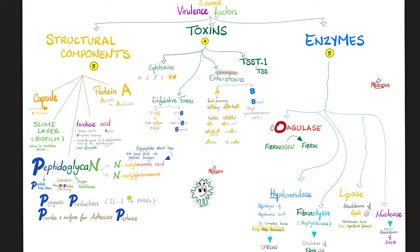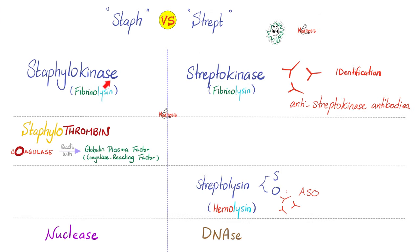As for the five enzymes: coagulase, hyaluronidase, fibrinolysin (also known as staphylokinase), lipase, and nuclease. The staphylokinase of Staph aureus is equivalent to the streptokinase of Streptococcus pyogenes — both are fibrinolysins that cause lysis of fibrin.